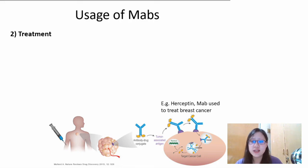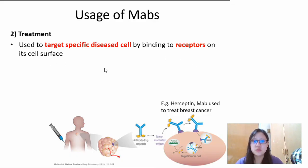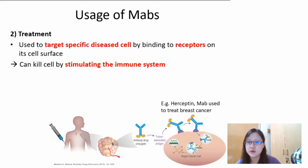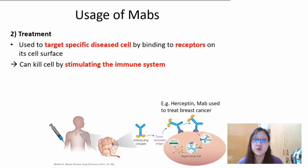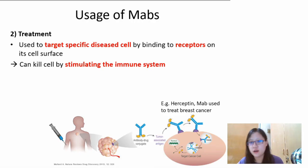Number two is treatment. MABs are used to target specific disease cells by binding to receptors on their cell surface. Maybe it could kill the cell — you know how antibodies can bind to pathogens and make it easier for macrophages to engulf them. If you could target the monoclonal antibody to certain cells which are damaged or cancer cells, it can bind to the cancer cell, present it to the immune system, so that the macrophage can engulf it and form an antigen-presenting cell. This can really help the patient recover.